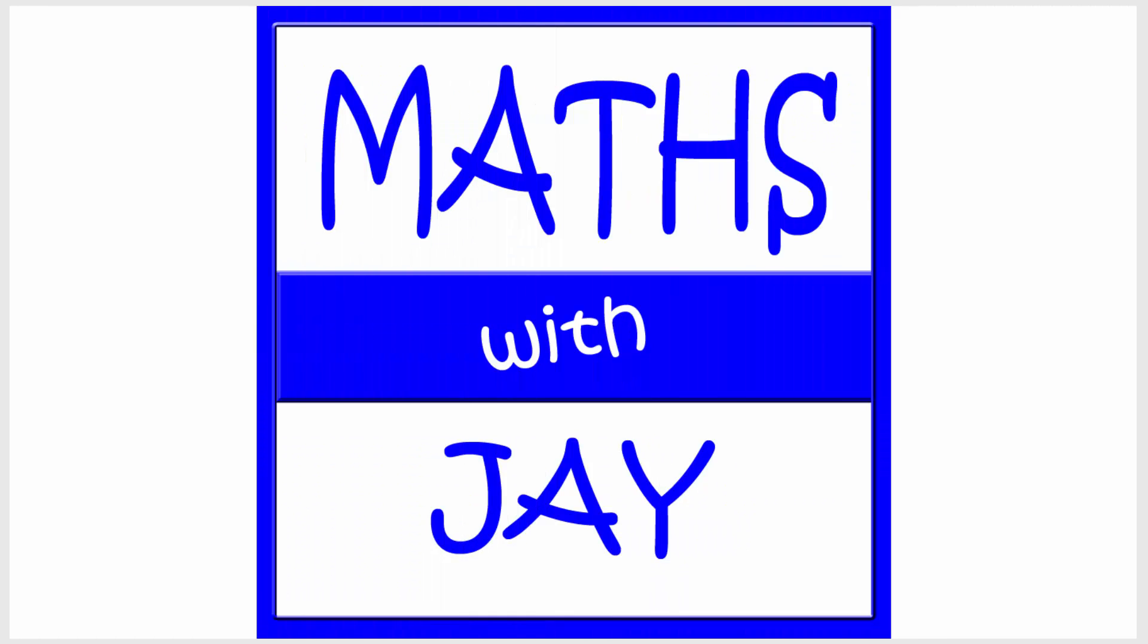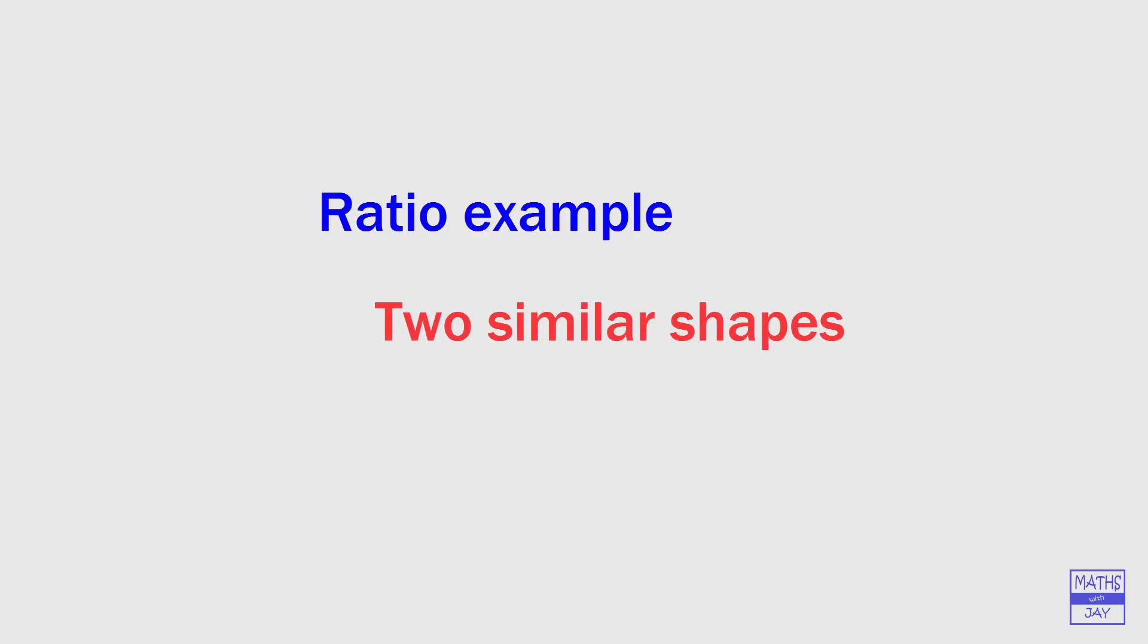Hello and welcome to Maths with Jay. What we're looking at here is a problem involving ratio. It's a typical problem where we're given two shapes with information about the lengths of two sides in one shape but only one side on the other, and we want to find a missing side.